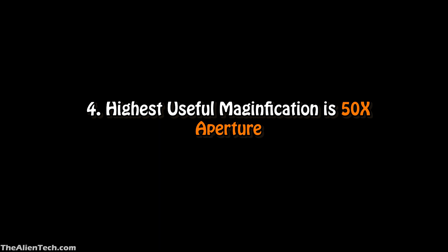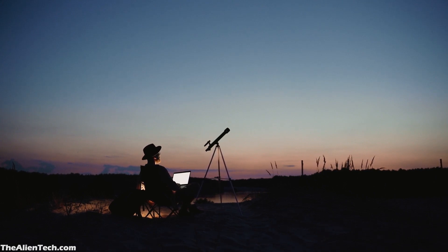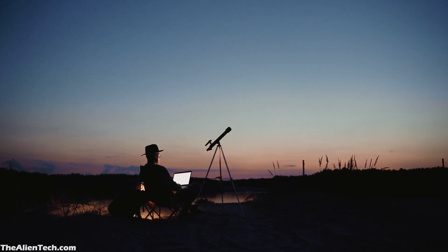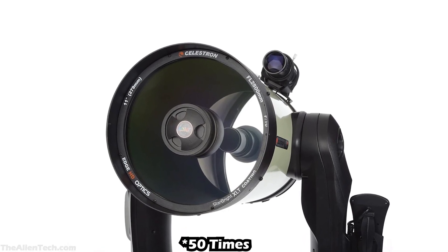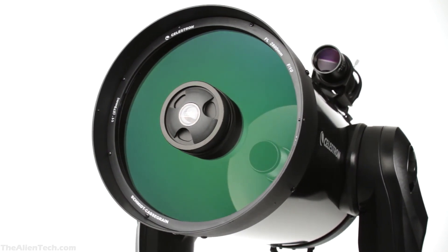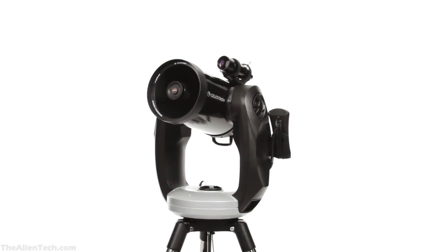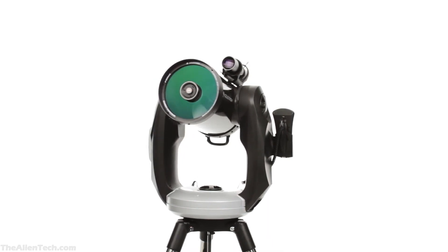Myth number four: The highest useful magnification is 50 times per inch of aperture. When you have a small telescope, then it might give quite good views even at 100 times magnification. When you have a large telescope, then it might not give you 50% per inch. Large telescopes also magnify the atmospheric disturbances. So at the top, it will give better views at 20% to 30% magnification per inch.